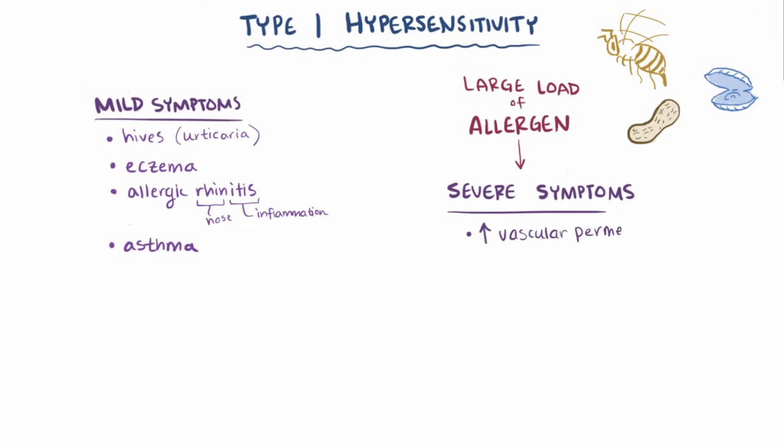The increased vascular permeability, along with the constriction of airways, can be severe enough such that the body can't supply the vital organs, like the brain, with enough oxygen-rich blood, a condition known as anaphylactic shock.